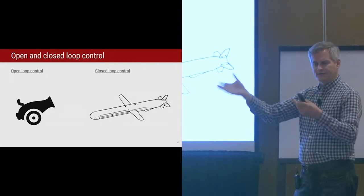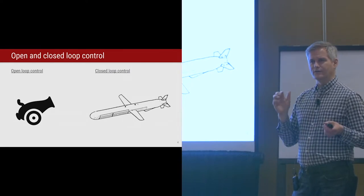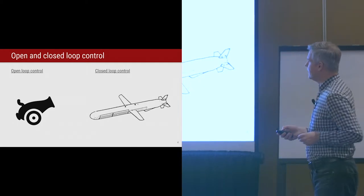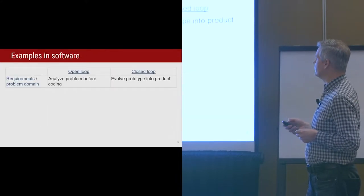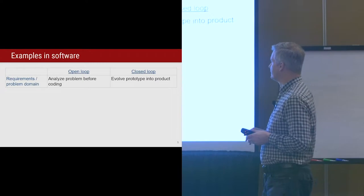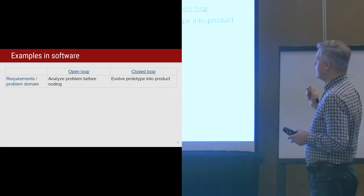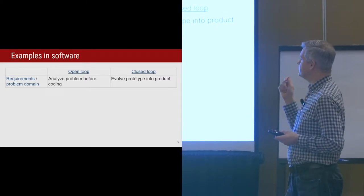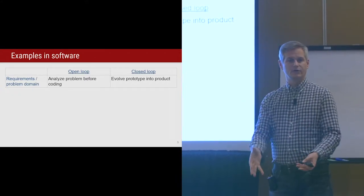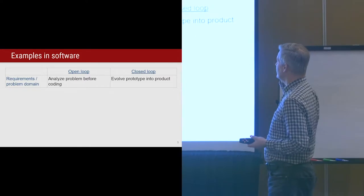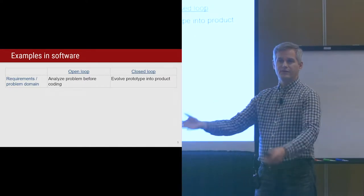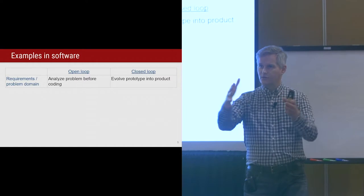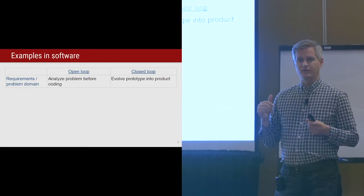When you hear this juxtaposition of ideas, it makes you feel like we're doing things horribly wrong if we're doing cannon stuff. I'd like to dig into this more deeply to figure out times when the cannon may actually be what we want to do. In terms of requirements, the open loop solution is you analyze the problem and come to an understanding of your problem domain before you start coding. Compare that with: you do the first use case in week one, build something, get another use case and realize you misunderstood - like the cruise missile adapting.